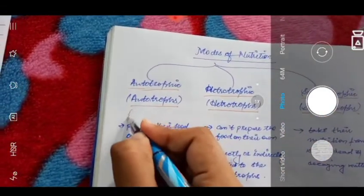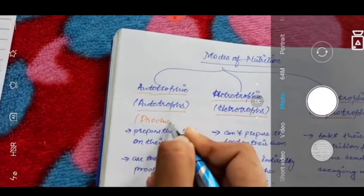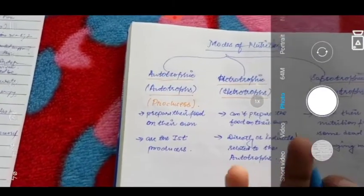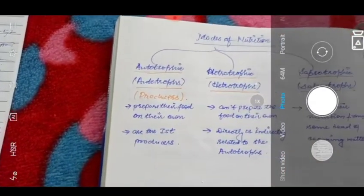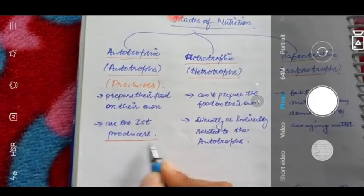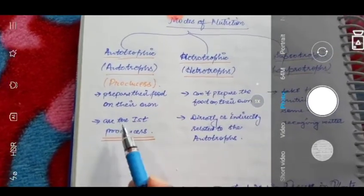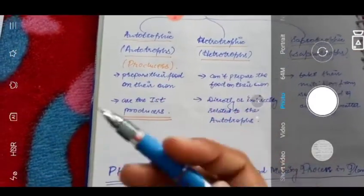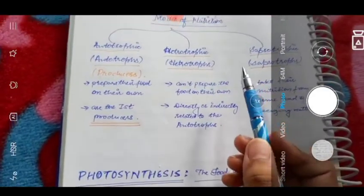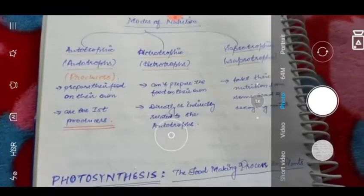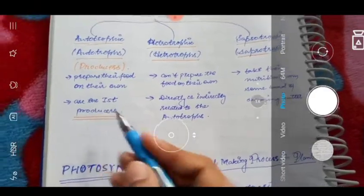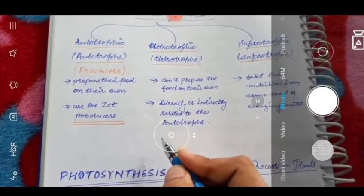Autotrophs are also called producers because they can prepare food on their own — they produce food. They are also called primary producers because they prepare food for themselves and for other organisms as well. Heterotrophs are organisms that cannot prepare food on their own, so directly or indirectly they are related to autotrophs. The best example of heterotrophs is us — humans.